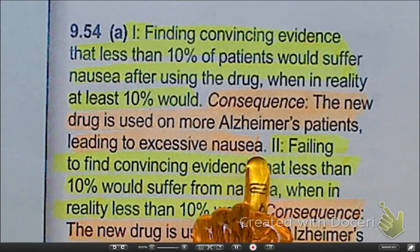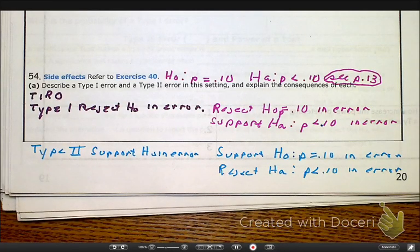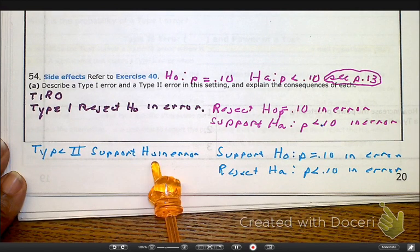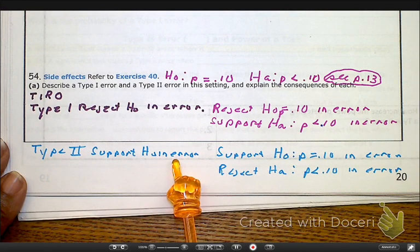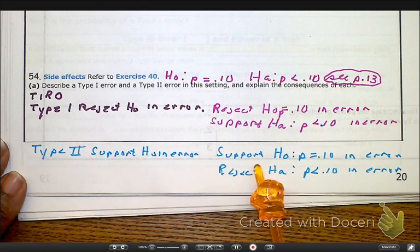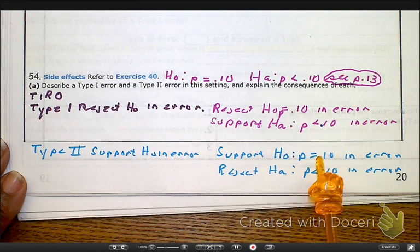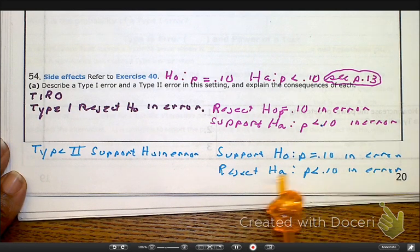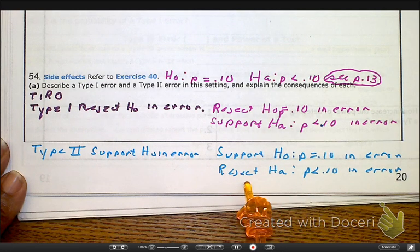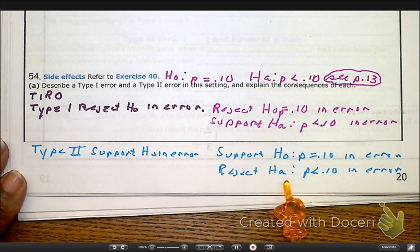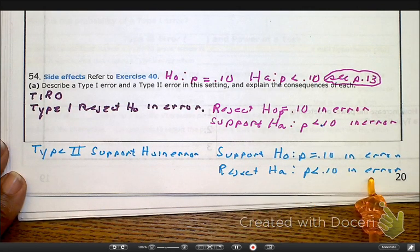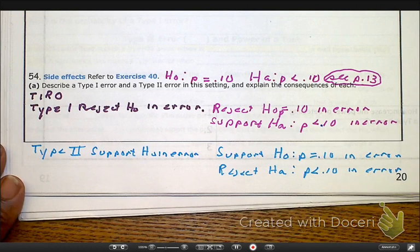Now let's look at the type 2 error. The type 2 is when we support the HO but we should not have. We support the HO that P equals 10% — that it's going to be what they say — and we reject the HA that P is less than 10%. That's an error.